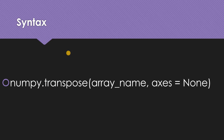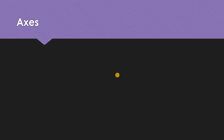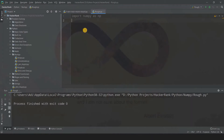Now let us see the syntax. The syntax is numpy.transpose(array_name, axes=None). The axis parameter will be discussed afterwards. The array name is obviously the array that you want to take the transpose of. Let us see some examples.